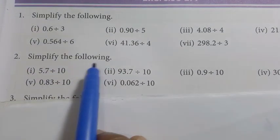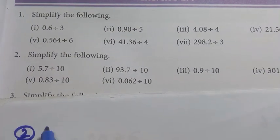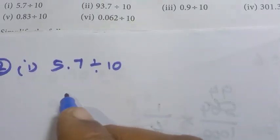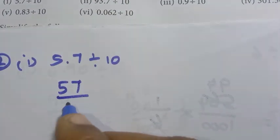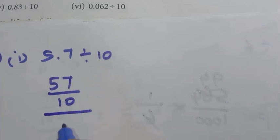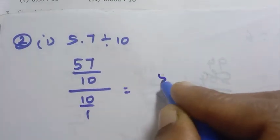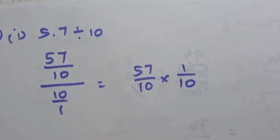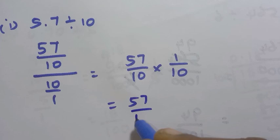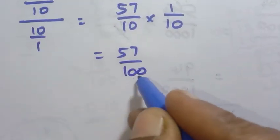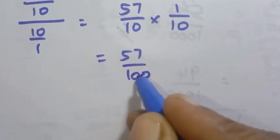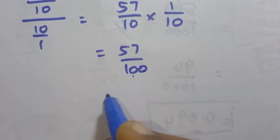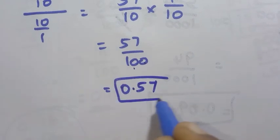Now the second set: simplify the following. First question: 5.7 divided by 10. 5.7 is 57 by 10. Divided by 10 by 1, so 57 by 10 into 1 by 10 gives 57 by 100. There are 2 zeros, so move the decimal point 2 places: the answer is 0.57.